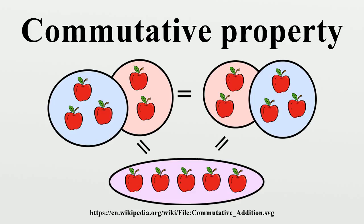The twists of the Rubik's Cube are non-commutative, and this can be studied using group theory. Also, thought processes are non-commutative: a person asked one question and then another may give different answers than a person asked in the reverse order, because asking a question may change the person's state of mind.